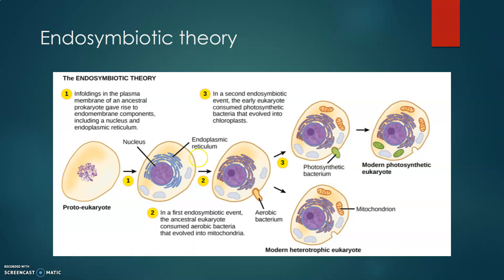What eventually happened was that this aerobic bacterium evolved into what we now know as the mitochondria of the cell, which provides the ATP energy that eukaryotic cells use to do most of their work.